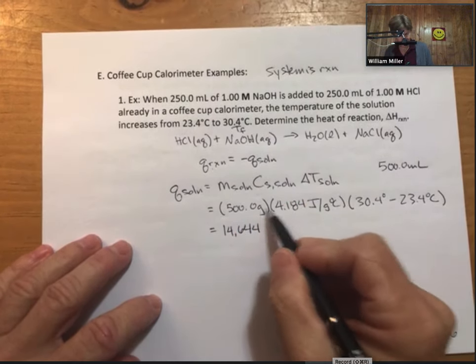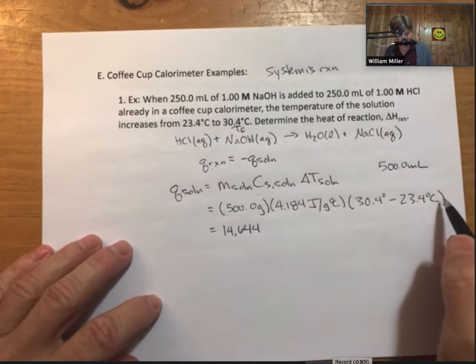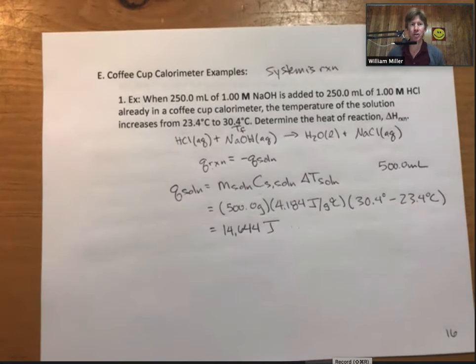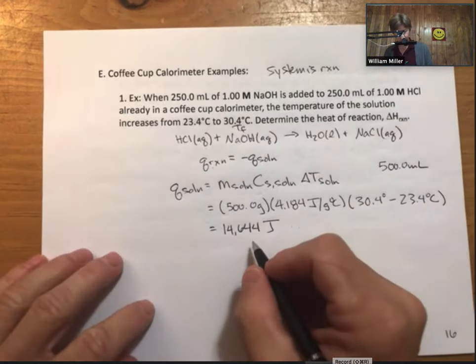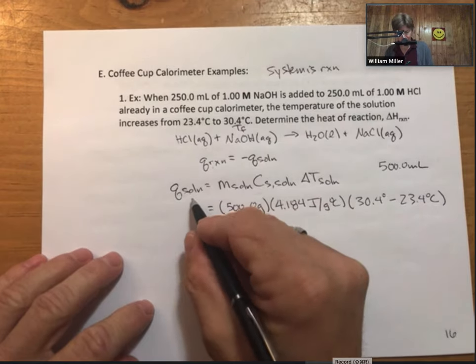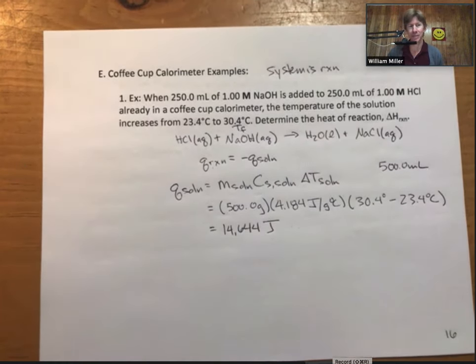Seven degrees times 4.184 times 500, we get 14,644 joules. Our grams cancel and our degrees Celsius cancel. Q's are heats - they will always have units of joules. That is a positive amount of energy that means the solution is taking in energy, the reaction is giving off energy.